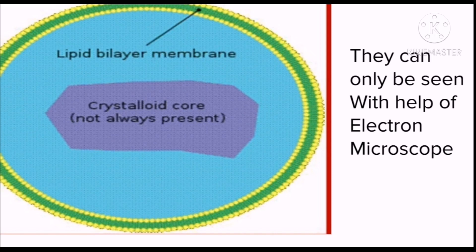Inside this membrane, a matrix is present which contains a large amount of oxidative enzymes. There are two types of microbodies: the first one is the peroxisome, and the second one is the glyoxysome.